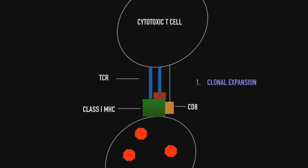The first action is clonal expansion: the number of cytotoxic T-cells for this antigen is increased, so that we're treating the PMW virus across the entire organism. Second, we induce apoptosis. To do this, the cytotoxic T-cell produces what are known as cytotoxins, and these cytotoxins enter the antigen presenting cells and induce apoptosis.